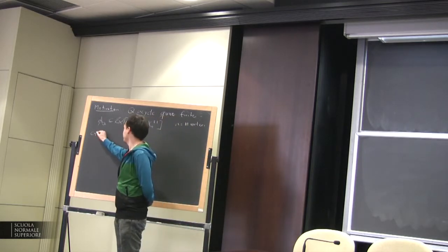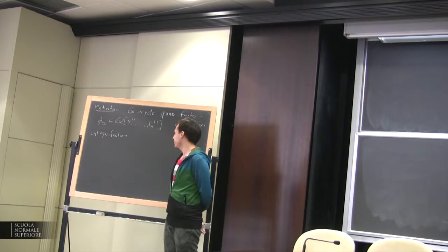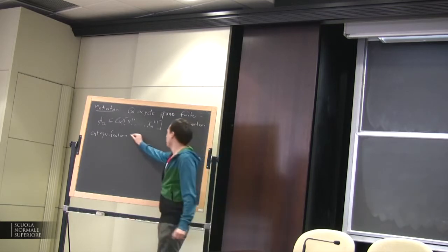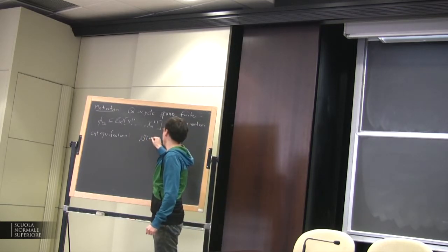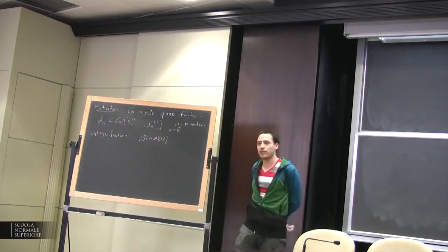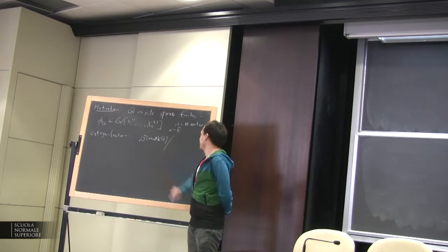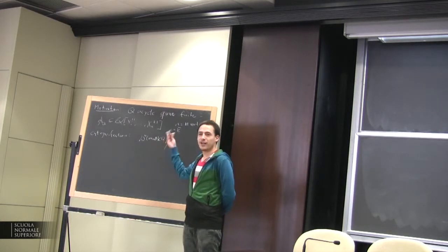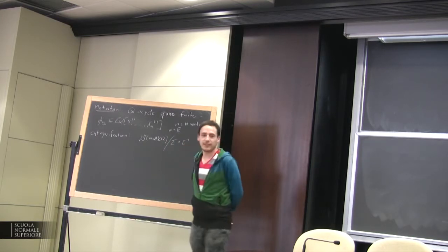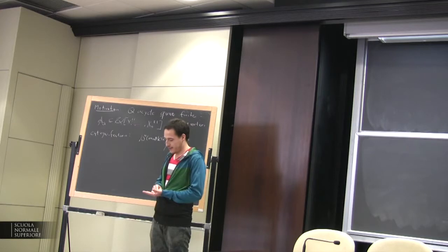The categorification is given by a certain orbit category. In this talk I will talk much more in detail about this orbit category. It's given by the derived category of the module category of the path algebra. Since we're not talking about geometry, we'll be happy with an algebraically closed field. He takes an orbit category with respect to a distinguished automorphism of this category, sigma composed with the inverse of the Auslander translation.